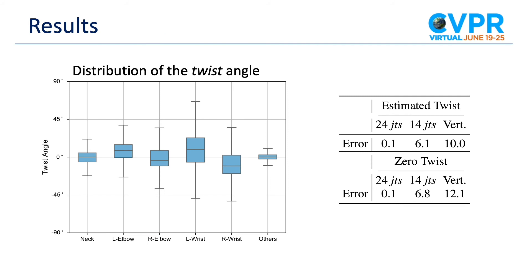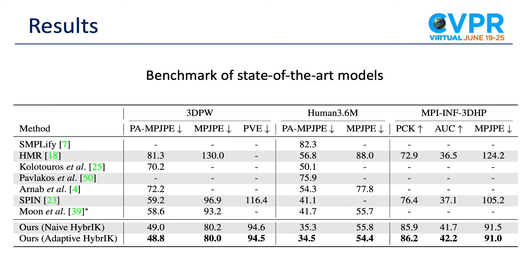In experiments, we count the distribution of the twist angle in the 3DPW dataset. We find that all joints have a limited range of twist angles, indicating that it is easy to estimate the twist rotation. Besides, we find that we can even use the zero twist angle to reconstruct the body mesh, and it shows small reconstruction error. We benchmark our method on three different datasets, and HYBRIC brings significant improvement and achieves state-of-the-art performance.